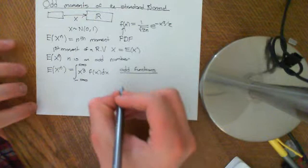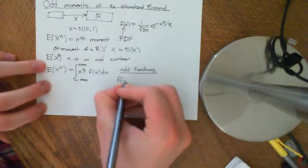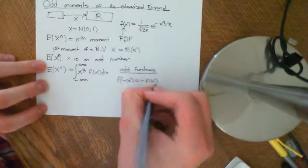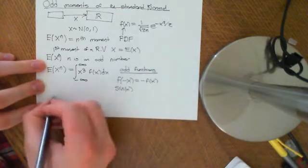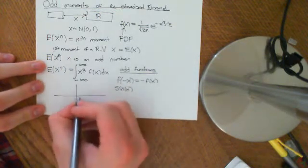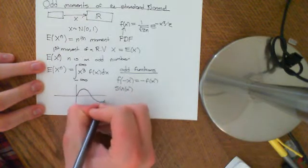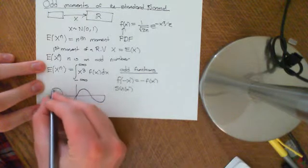So an odd function is one where f of negative x is equal to negative f of x. For instance, an example would be sine of x. If we plot the graph of sine of x, what we're going to get is on the positive side it looks something like that. And on the negative side it's the exact negative of what you've got on that side.